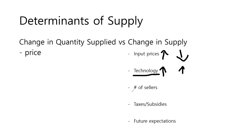Third, if the number of sellers increases, supply will increase; if the number of sellers decreases, supply will also shift to the left. The fourth factor is taxes and subsidies. Taxes are what the government takes from a certain industry or firm, while subsidies are what the government gives. If the government imposes additional taxes, supply will decrease. If the government subsidizes a certain industry or firm, supply will increase.